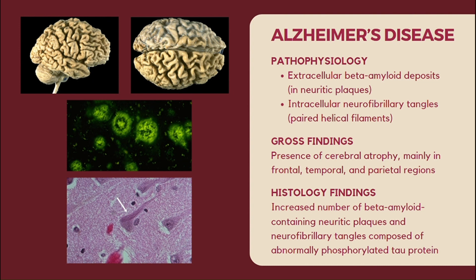Shown here is the brain with pronounced atrophy in Alzheimer's disease, seen superiorly and laterally. Microscopic analysis of brain tissue from Alzheimer's patients reveals neuritic plaques characterized by the accumulation of beta-amyloid peptides surrounded by dystrophic neurites and reactive glial cells, which disrupt synaptic transmission and contribute to neuronal toxicity. Additionally, neurofibrillary tangles composed of abnormal aggregates of hyperphosphorylated tau protein are observed within the cytoplasm of neurons, interfering with normal cellular function and promoting neuronal degeneration.